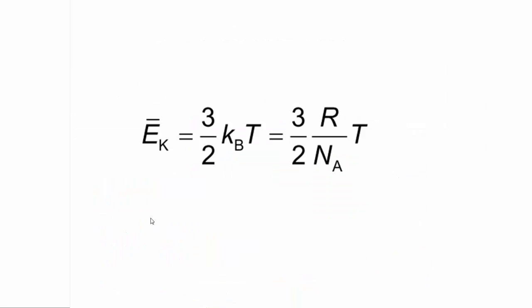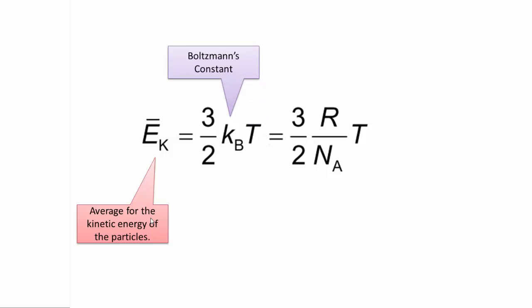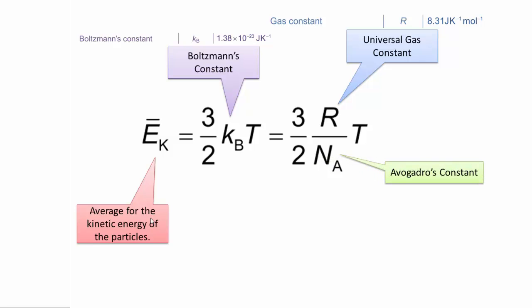Now here we have the equation again, as it's written in the data booklet. This is the average kinetic energy of the particles. This is Boltzmann's constant. Now Boltzmann's constant is 1.38 times 10 to the negative 23 joules per Kelvin. R is a universal gas constant, which is 8.31 joules per Kelvin per mole. And NA is Avogadro's constant, which is 6.02 times 10 to the 23 per mole. It tells you how many particles are in a mole.